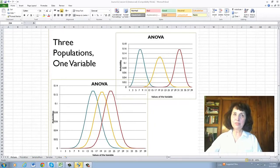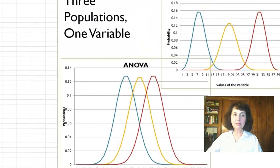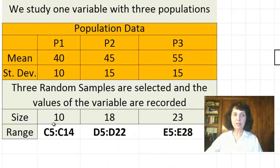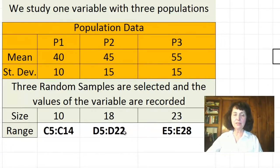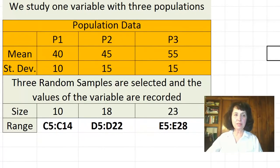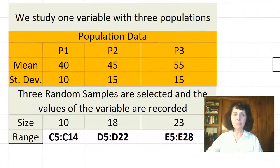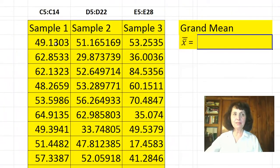In this example of analysis of variance, I have three populations. These are some of the values of these populations. I have their means and standard deviations. Mathematically, I selected three random samples from these three populations.